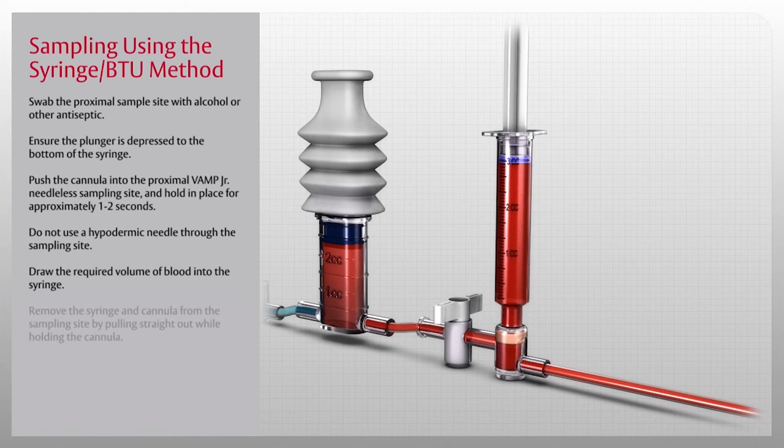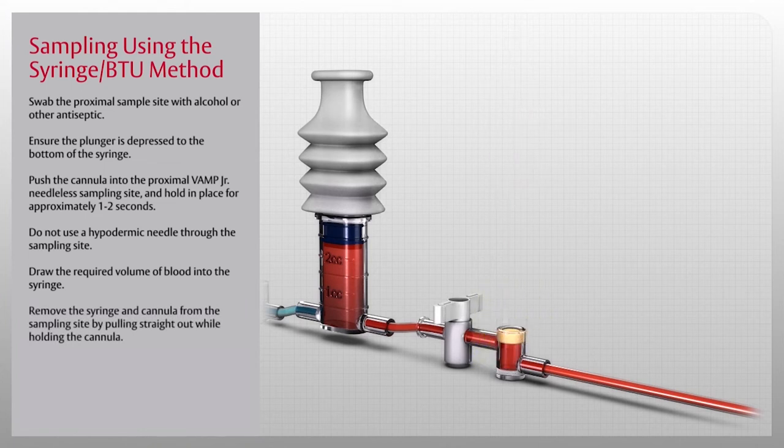Once the blood is drawn, remove the syringe and cannula from the sampling site by pulling straight out while holding the cannula.